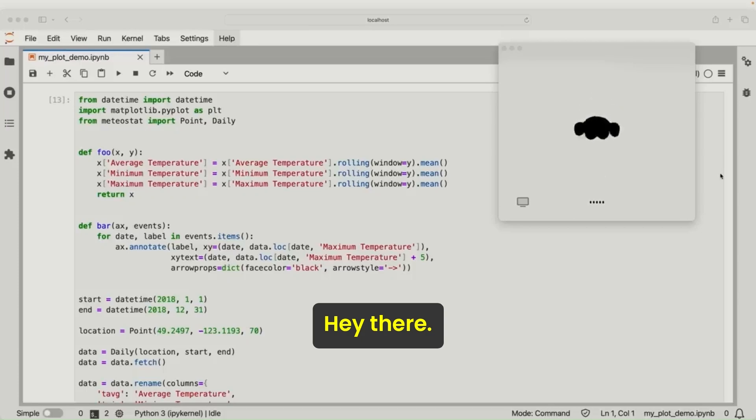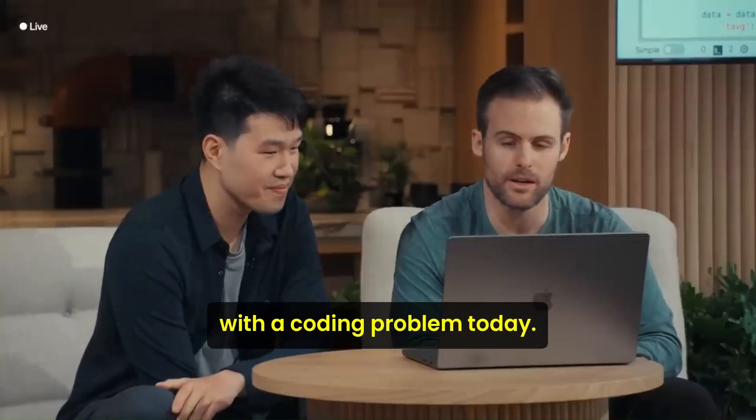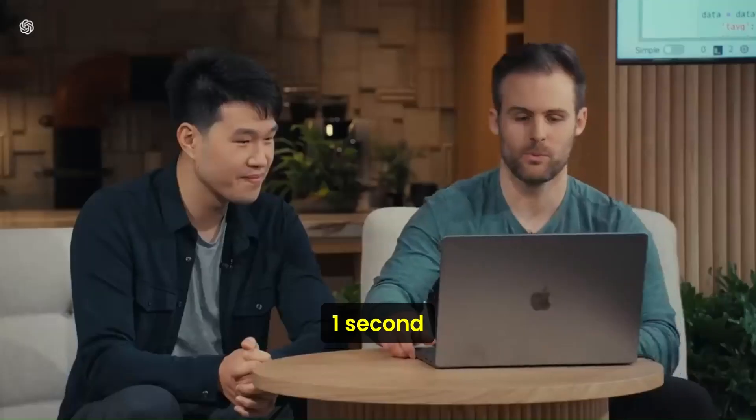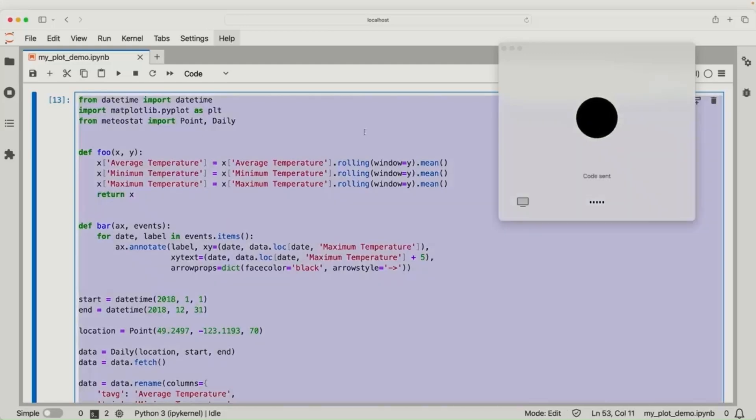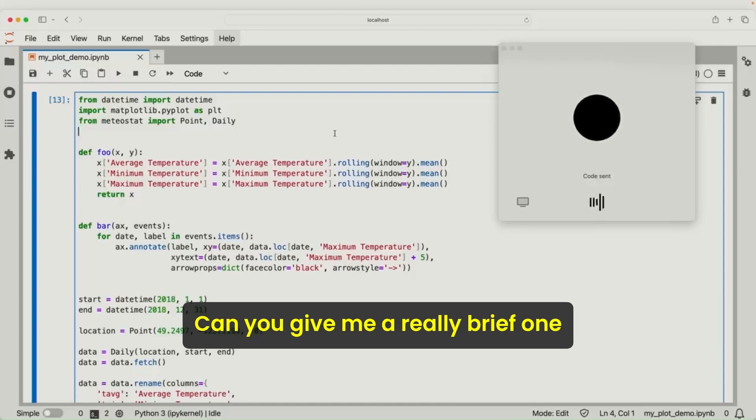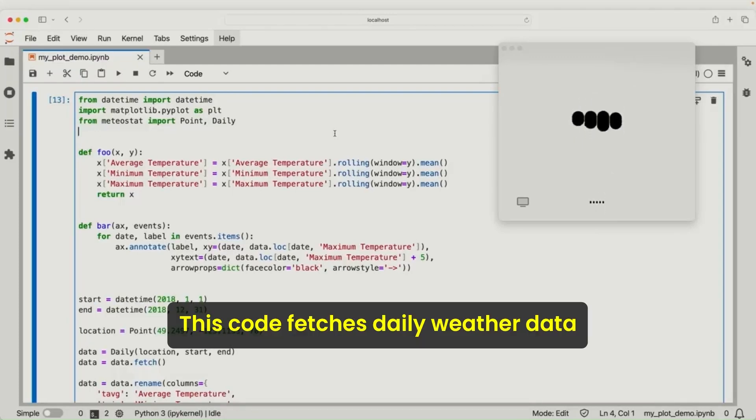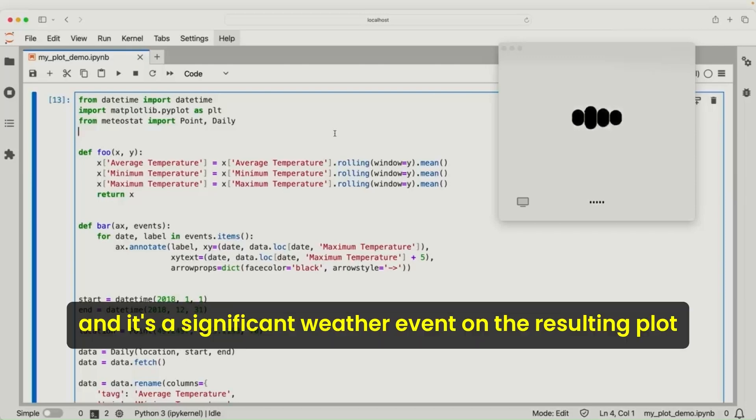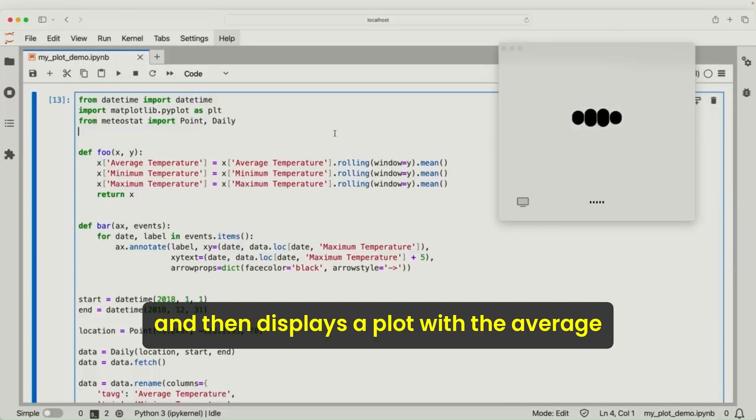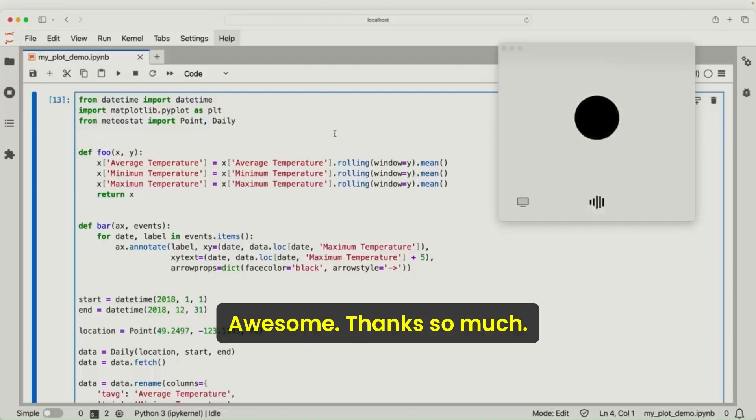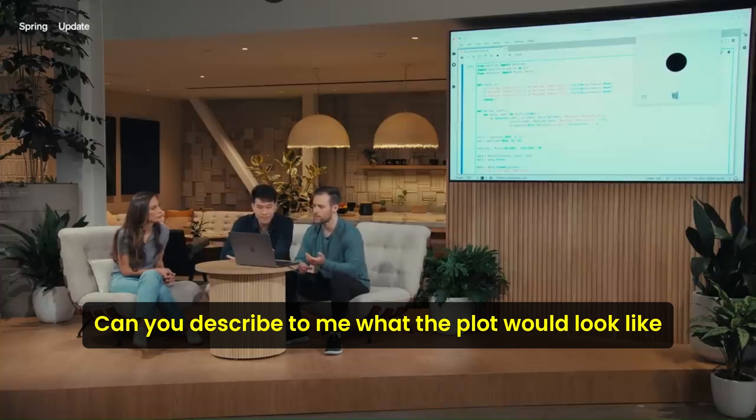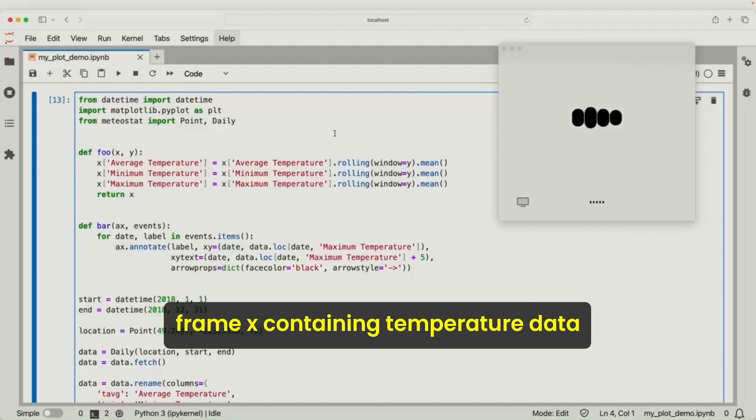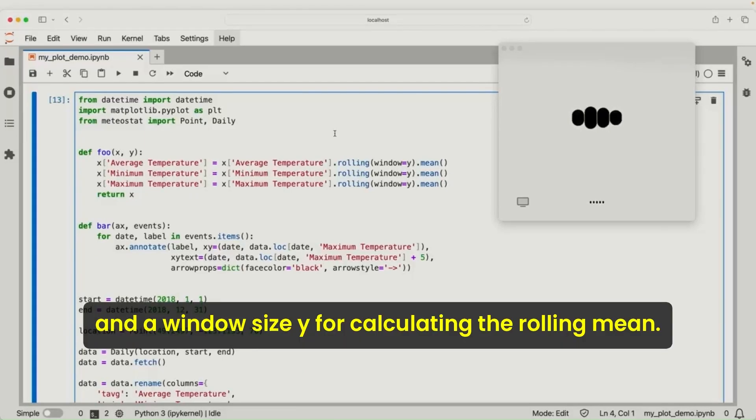Hey ChatGPT. Hey there. How's it going? Yeah, it's going really well. I was wondering if you could help me with a coding problem today. Of course. I'd love to help you out. What's the coding problem you're dealing with? Okay. I'm going to share with you some code. One second. Sure thing. Take your time. Okay. So I just shared some code with you. Could you give me a really brief one sentence description of what's going on in the code? This code fetches daily weather data for a specific location and time period, smooths the temperature data using a rolling average, annotates a significant weather event on the resulting plot, and then displays the plot with the average, minimum, and maximum temperatures over the year. Awesome. Thanks so much. And in the code, there's this function foo. Can you describe to me what the plot would look like if I had versus didn't have this function? Sure. The function foo xy takes in a data frame x containing temperature data and a window size y for calculating the rolling mean.